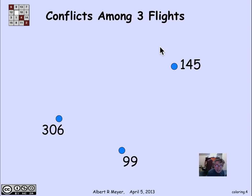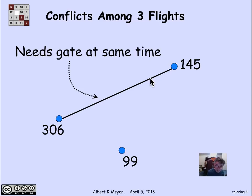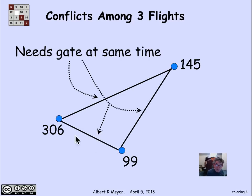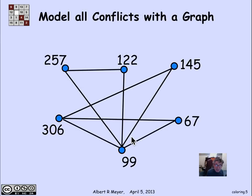To handle that conflict, abstractly we assign each aircraft to be a vertex of a graph, and we put an edge to indicate conflict, not compatibility. Compatibility was what we looked at with matching. This line means that 306 and 145 are on the ground at the same time — they conflict and need different gates. Likewise, 99 and 145, and 306 and 99 — those three flights were on the ground simultaneously. Filling in the graph with all vertices and edges for simultaneous ground time gives us this graph.